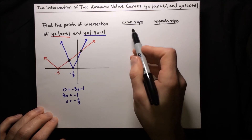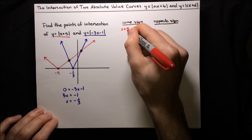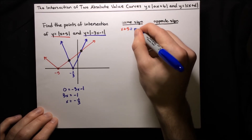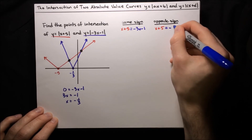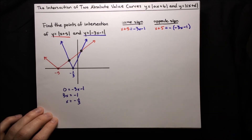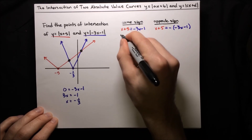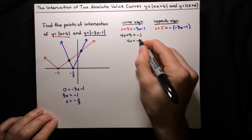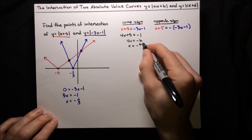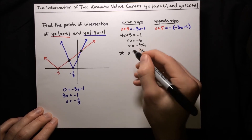So let's go ahead and set up our equations and solve them. For the same-sign equation, the arguments of the absolute values are set equal to each other: x plus 5 equals negative 3x minus 1. We add 3x to both sides and get 4x plus 5 equals negative 1, then subtract 5 to get 4x equals negative 6, then divide by 4 to get x equals negative 6 over 4, which simplifies to x equals negative 3 halves. We'll star that — it's part of our solution.